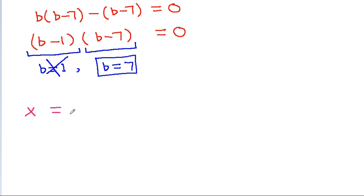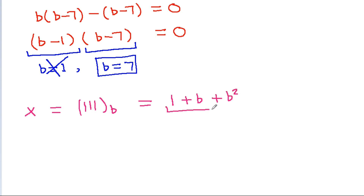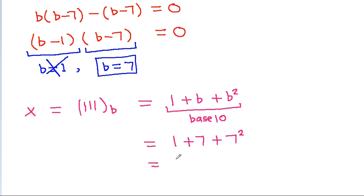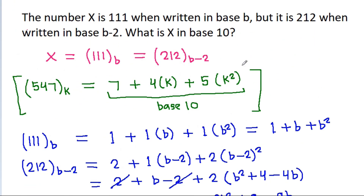So x equals 111 in base b, which in base 10 is 1 plus b plus b squared. With b equal to 7, that is 1 plus 7 plus 49, which equals 57. So x in base 10 is 57.